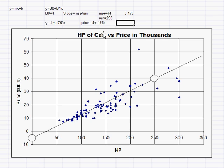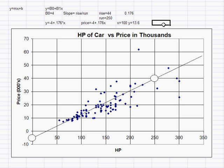Lastly, we use these equations to predict things. For example, if we put in 100 horsepower, how much should a car cost? We can look at that two ways. First, look at the line: 100 horsepower looks like maybe around $13,000. Or we can plug in 100 for x: 0.176 × 100 = 17.6, subtract 4, equals 13.6. So if x = 100, then y = 13.6 thousand dollars. We would use that to figure out whether a car's price for 100 horsepower is reasonable or too much.